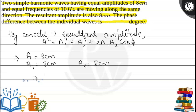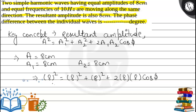Substituting all values into the formula: 8² = 8² + 8² + 2·8·8·cos(φ), which gives 64 = 64 + 64 + 128·cos(φ).